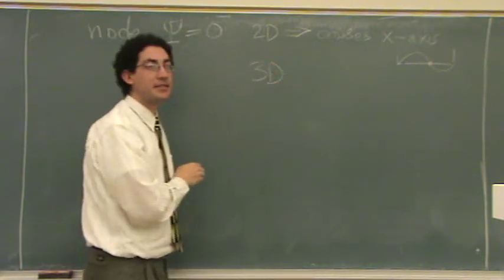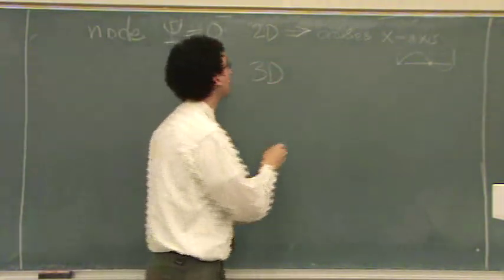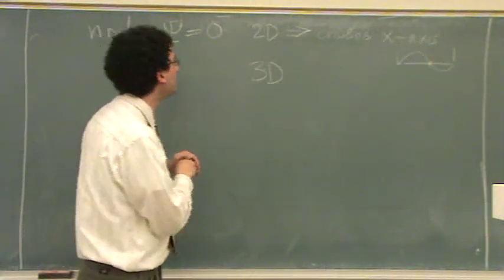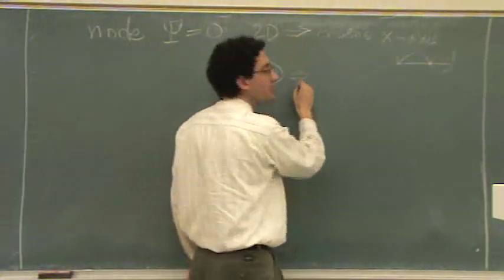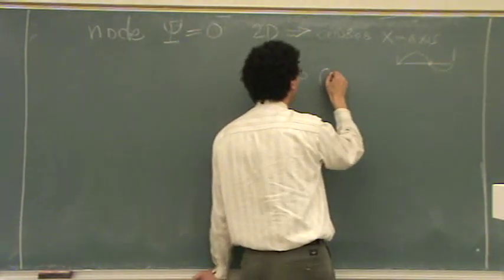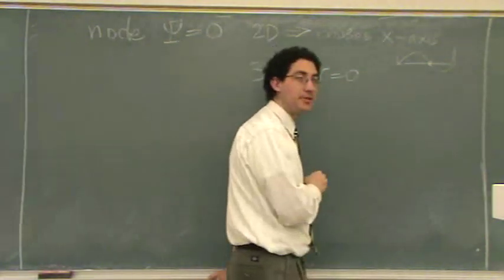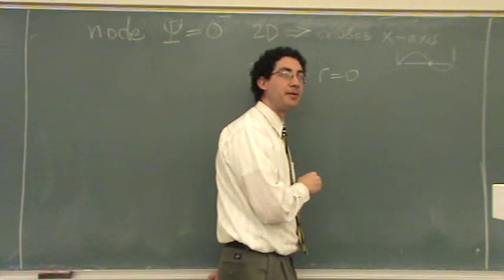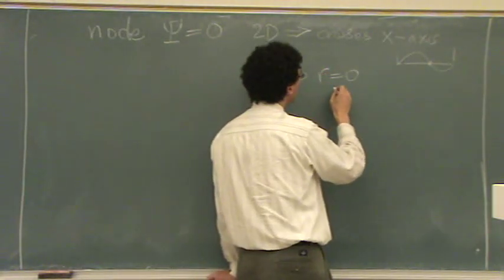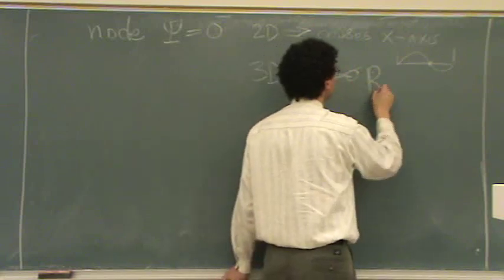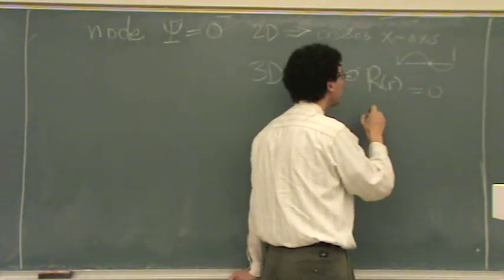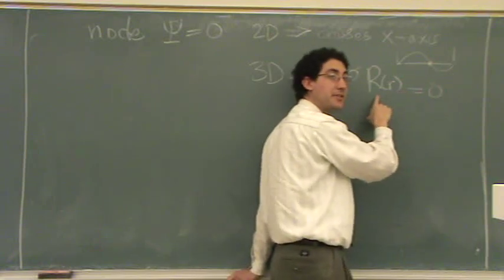When you get to three dimensions it gets a little more complicated, but the same definition still holds — the wave function equals zero. There's no real x-axis, so that's where r equals zero. More specifically, that's when the radial wave function equals zero.